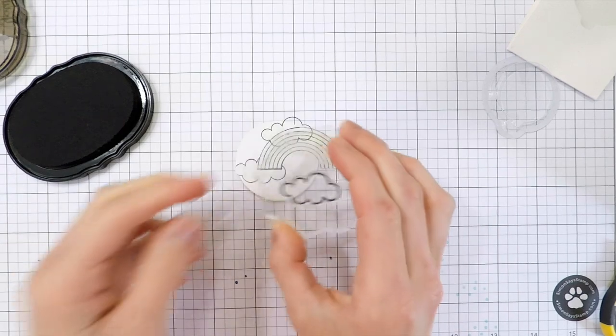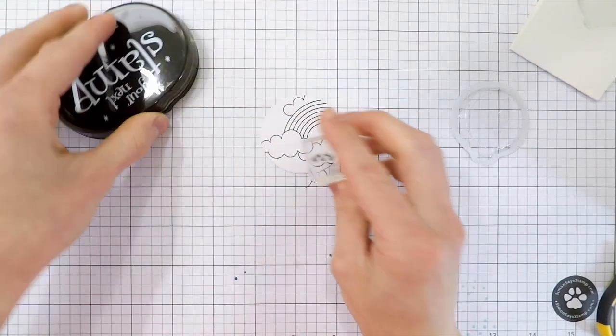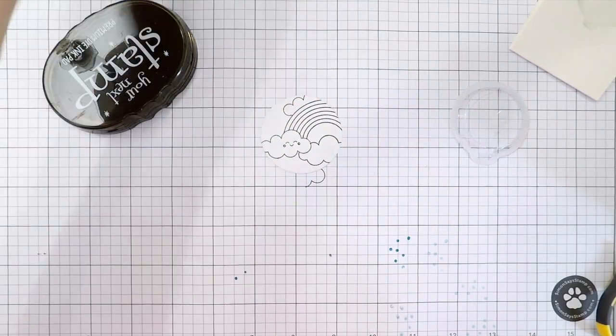I also made a mask for the rainbow, and I'm going to now stamp a couple more clouds to finish off the scene. Once I have all of my stamping done, that'll allow me to start working on the coloring. And then as one more final detail, just to make the scene come to life, I stamped one of the little smiling faces onto my cloud as well.